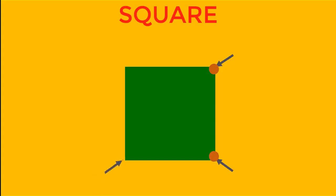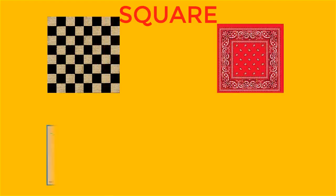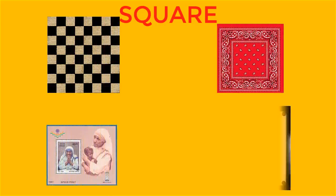It has 4 corners: 1, 2, 3 and 4. Some examples of square are chessboard, kerchief, stamp, carom board.